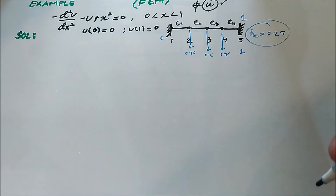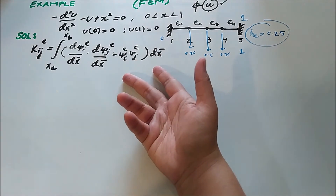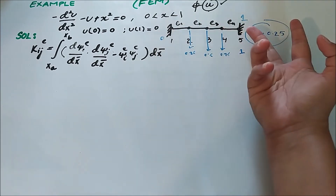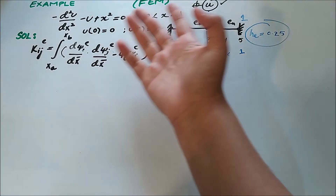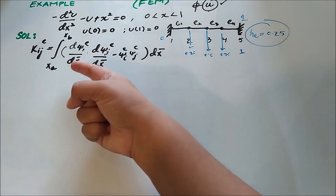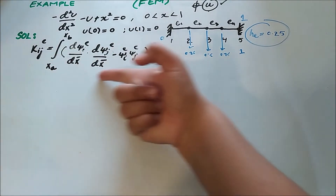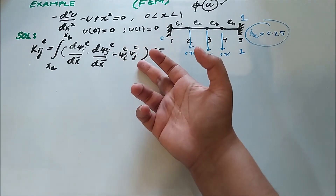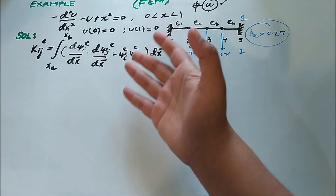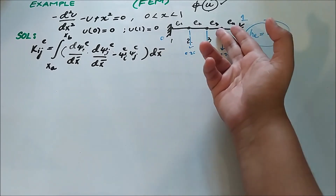We know the general structure of the stiffness matrix from previous videos. For the element level, at local coordinates x_a and x_b (the first and second ends), we use the shape functions ψ_i and ψ_j. Here, x-bar indicates we are in the local coordinate system at the element level. All four elements are linear, so the structure of the stiffness matrix is the same for each element.